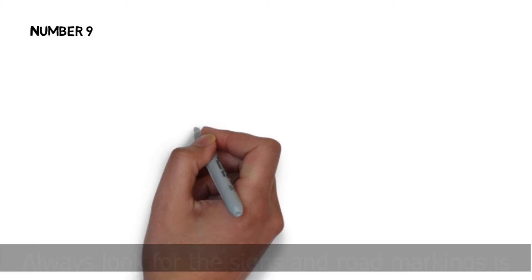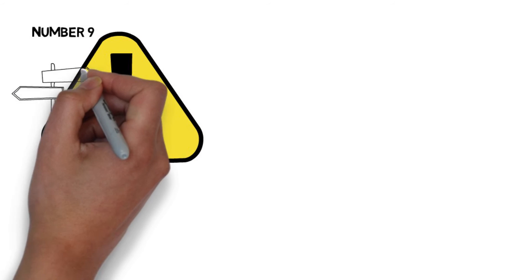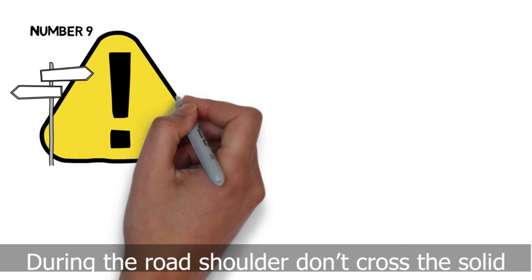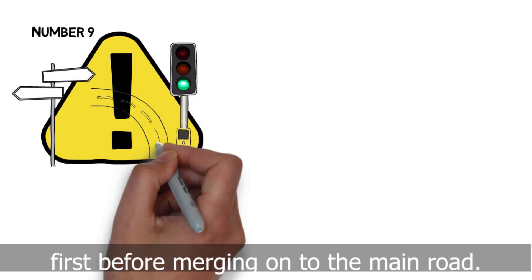Number 9. Always look for the signs and road markings is very important. During the road shoulder don't cross the solid line and make sure to check the surroundings first before merging onto the main road.